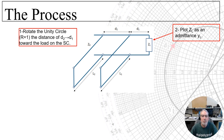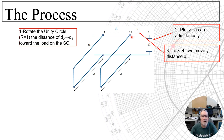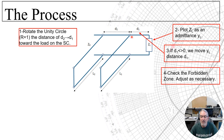For step 2, plot your load impedance as an admittance yL — we're going to work in admittance mode on the chart. Step 3: if d1 does not equal 0, then we need to transform our load admittance by moving it toward the generator by the distance d1. Step 4 will then have you checking the forbidden zone issues, and if there is a problem, your remedies include changing d1 or d2, as we talked about previously.